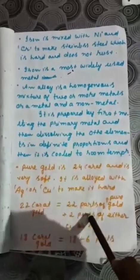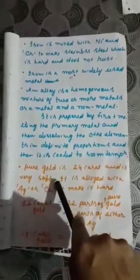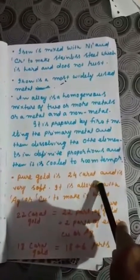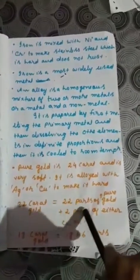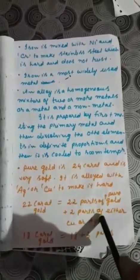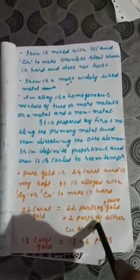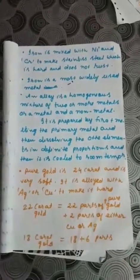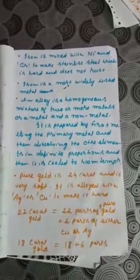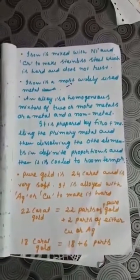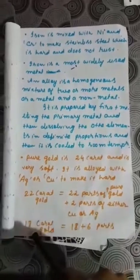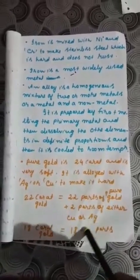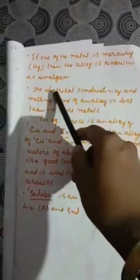Pure gold is 24 carat. 22 carat gold means there are 22 parts of pure gold and 2 parts of either copper or silver — it is made harder because pure gold is very soft and cannot be used to make ornaments as-is. 18 carat gold means 18 parts of pure gold and 6 parts of copper or silver. If one of the metals in an alloy is mercury, it is known as an amalgam.